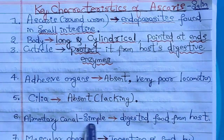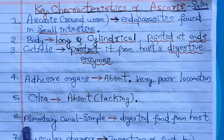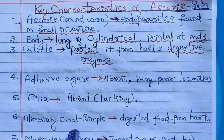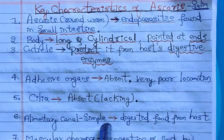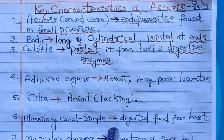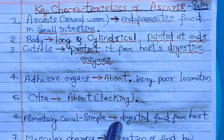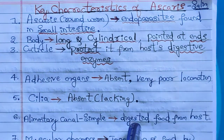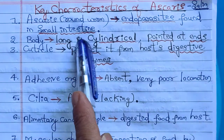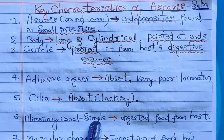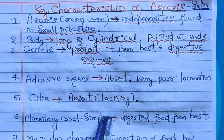Coming to the digestive system, the alimentary canal of Ascaris is very simple. It gets ready-made, completely digested food from the host's intestine, so the alimentary canal does not need to be complex.